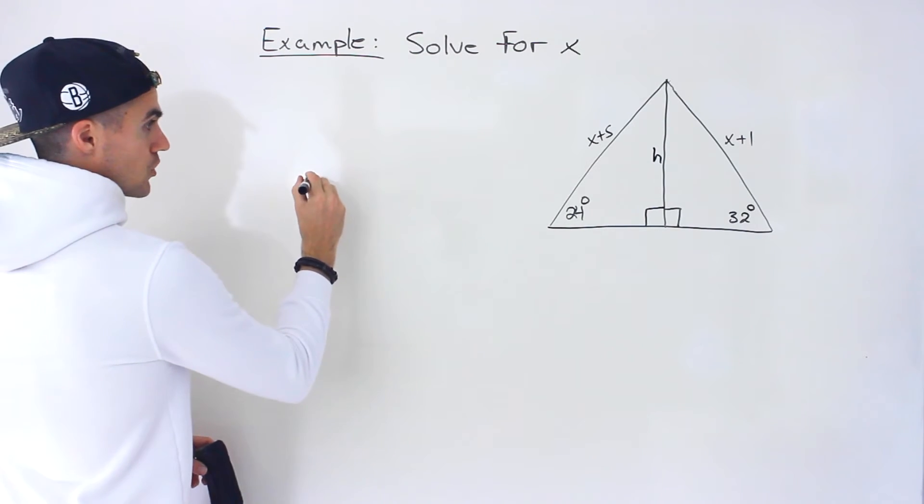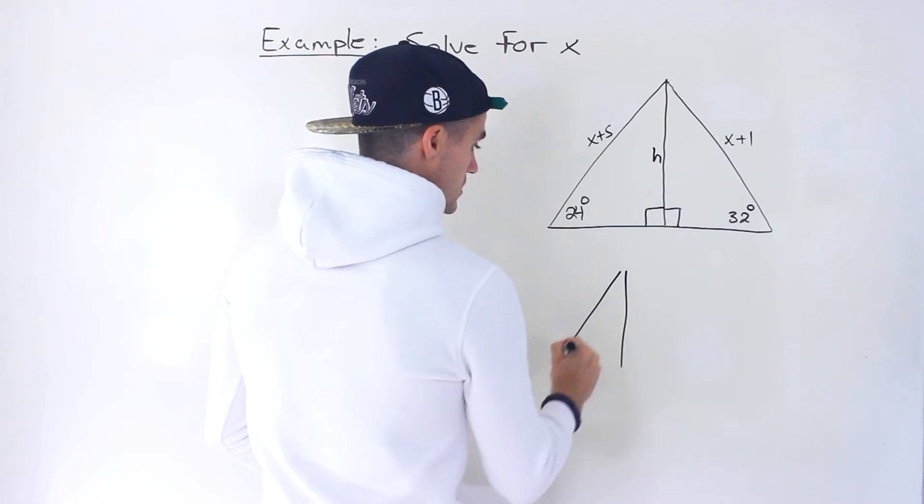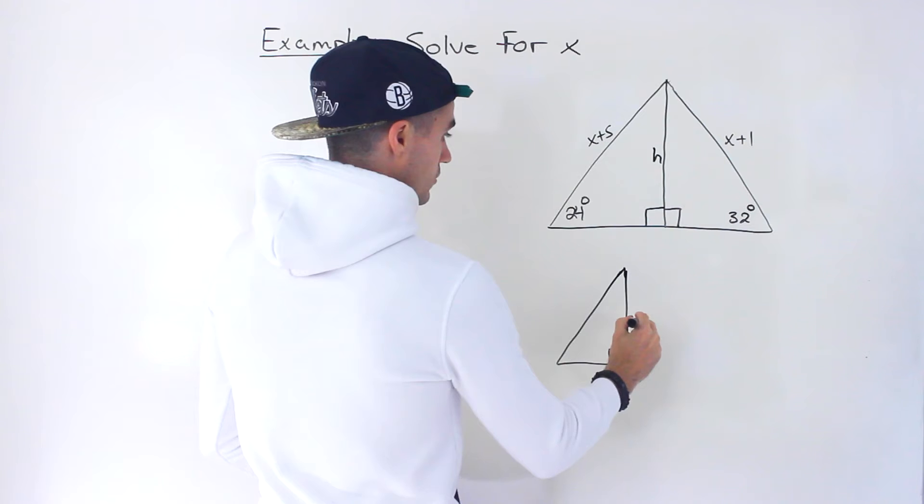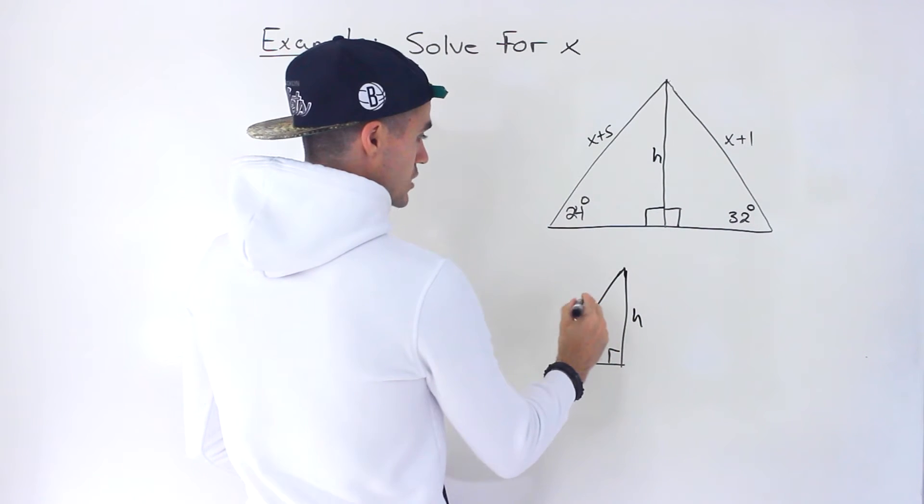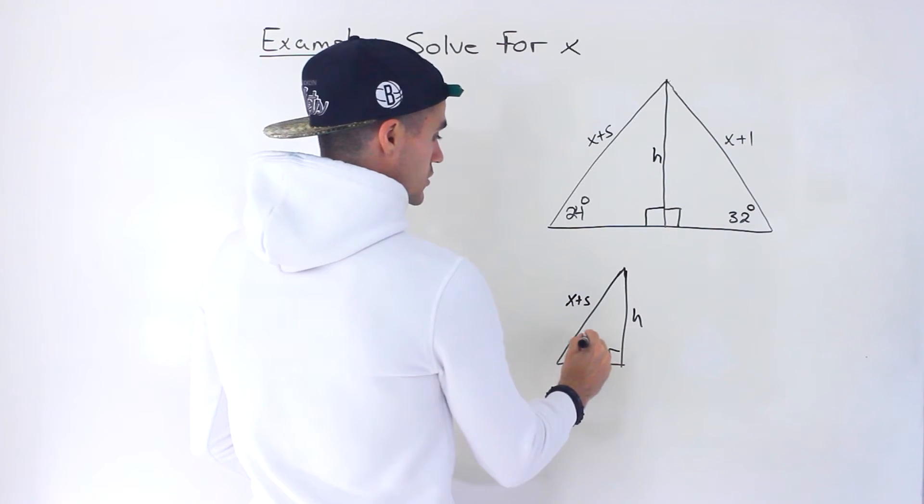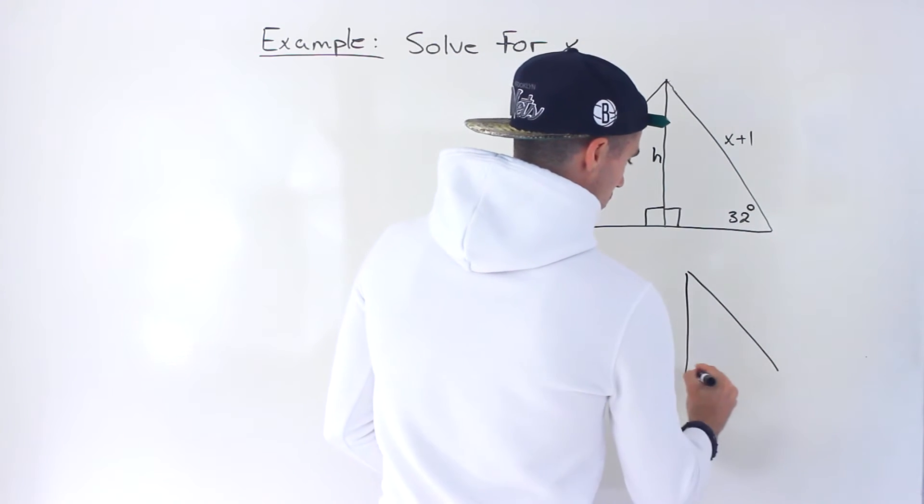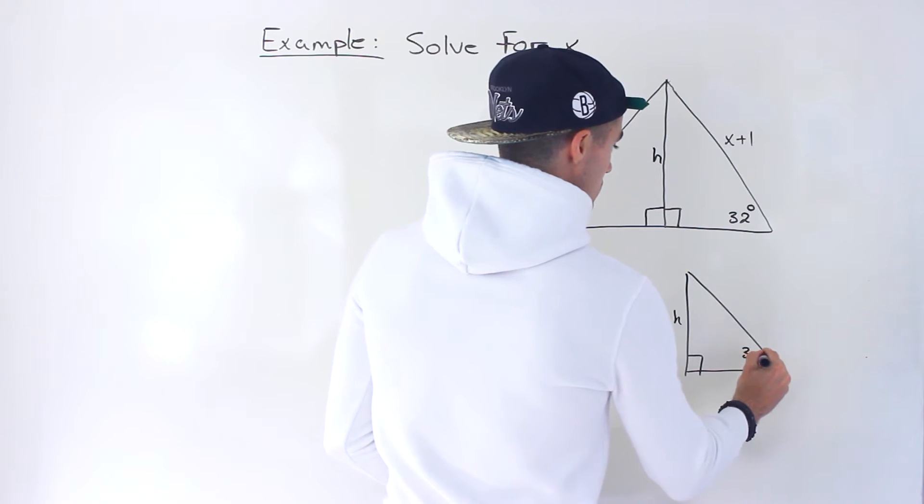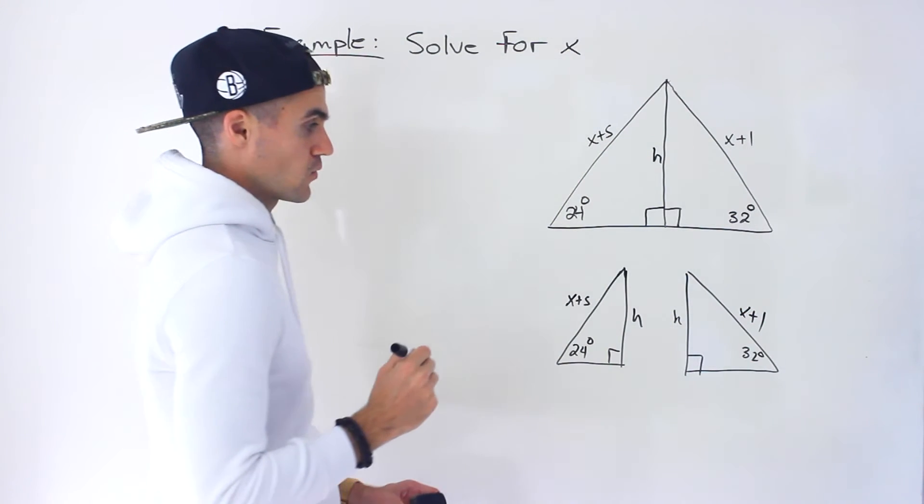Let's redraw these triangles separately, just so you can see it a little more clear. We have this triangle that has this side h, x plus 5, and it has this angle 24 degrees. Then we have this triangle over here which has h, 32 degrees, and then this side here is x plus 1.